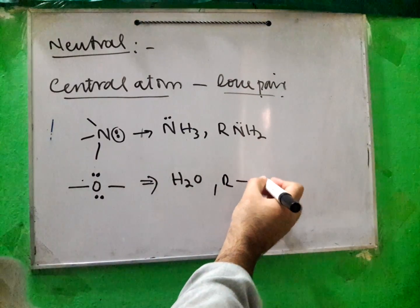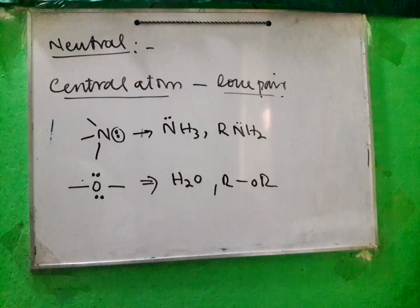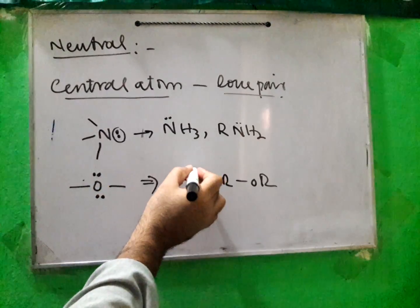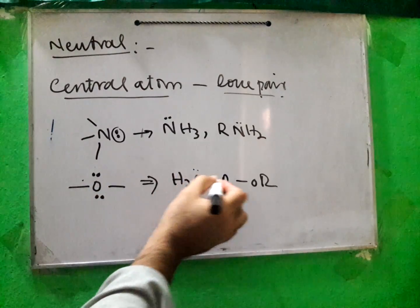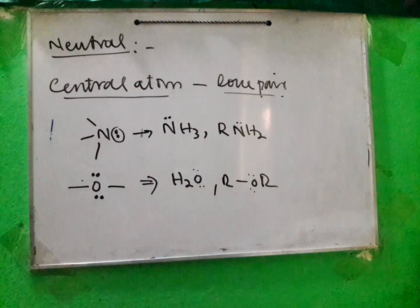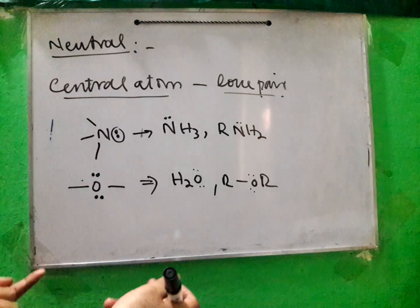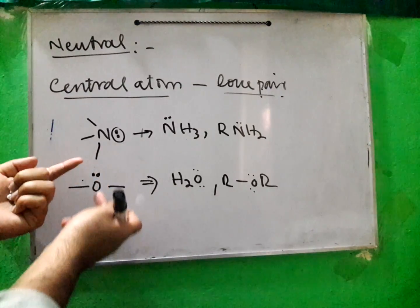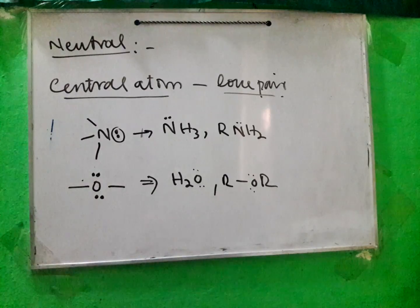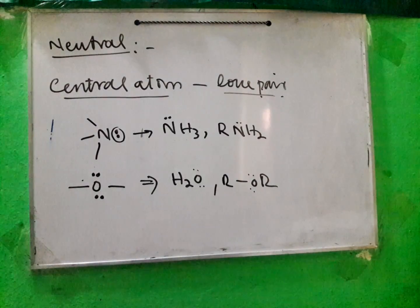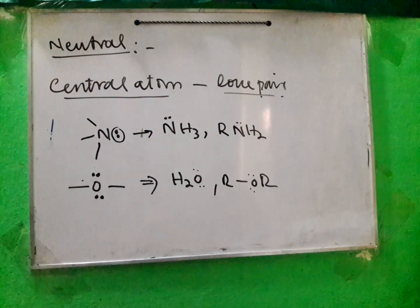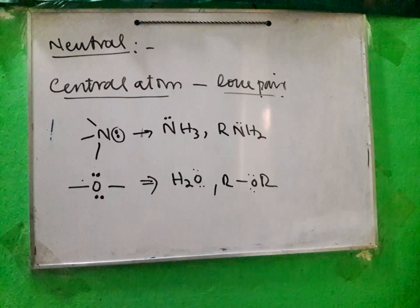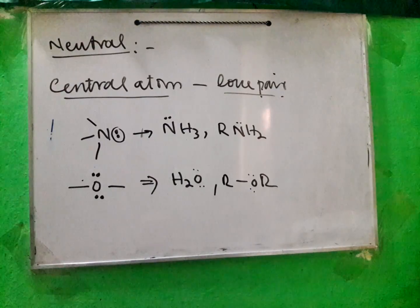Another example is ROR (an ether), where oxygen is in the middle with two lone pairs and two bonds. One lone pair is available for donation, so ethers can be neutral nucleophiles.